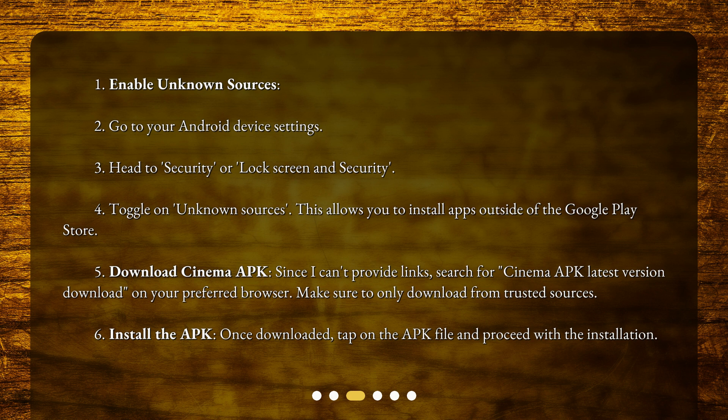Next, download Cinema APK. Search for 'Cinema APK latest version download' on your preferred browser, and make sure to only download from trusted sources. Once downloaded, tap on the APK file and proceed with the installation.